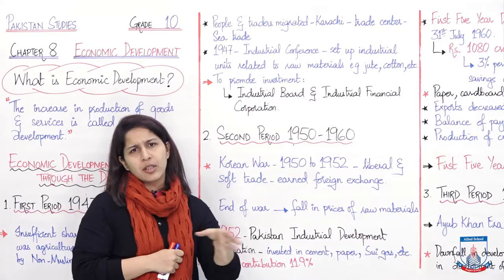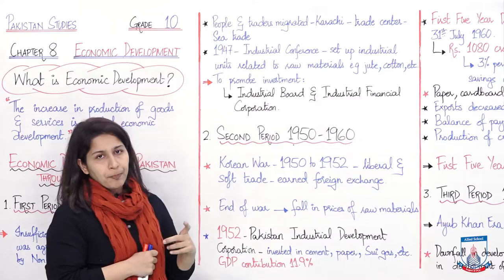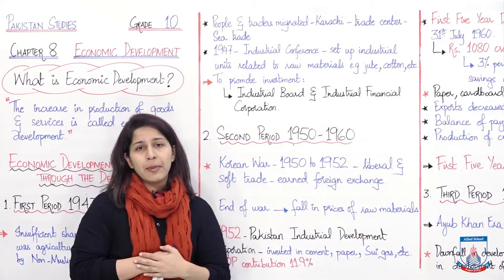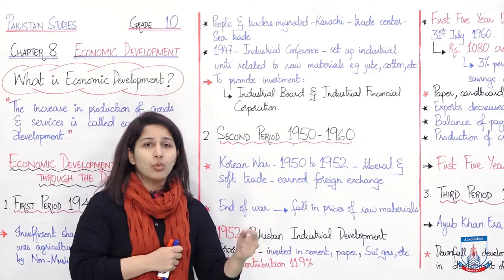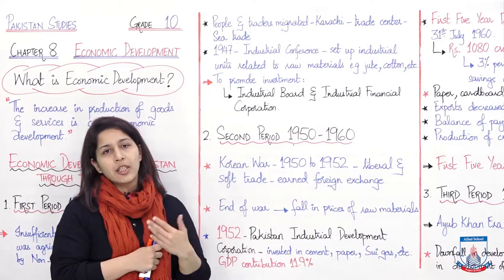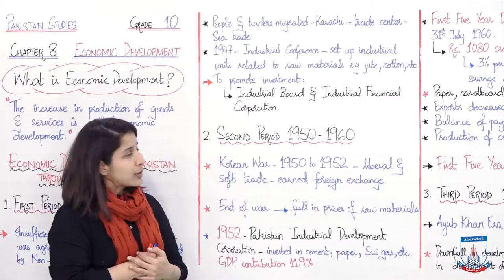The biggest migration of mankind took place — hazaaron ki tadaad mein log India ki side se Pakistan aaye, jo people of the subcontinent thay. Un logon mein traders bhi the, karobari log bhi the. So the people and traders migrated, aur jo major city bani, jo trade center bana, wo tha Karachi. Karachi became the trade center kyunke karobari logon ne wahan pe apna setup kiya — sea route, Arabian Sea, was very near aur wahan se exports ka karubar barhana asaan tha.